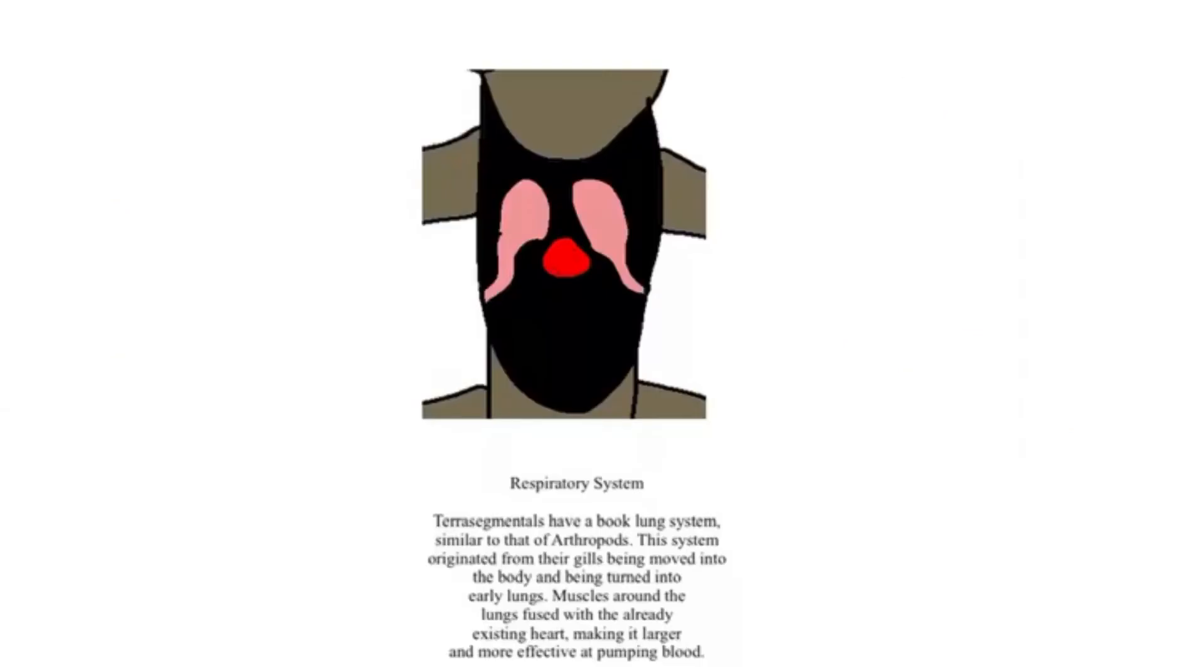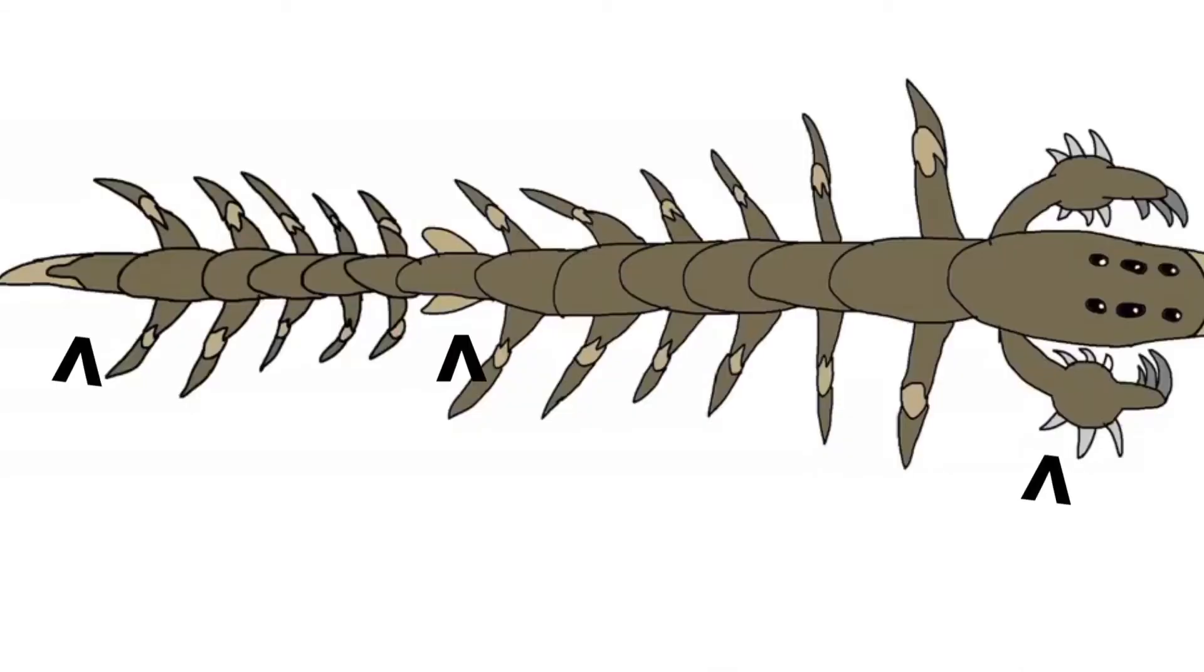These lungs that are seen in most segments of the animal might be similar to the book lungs of Earth's arthropods. The air would pass into the lungs through spiracles, which might be found as holes on the side of all the segments except for the tail, head, and reproductive segment.